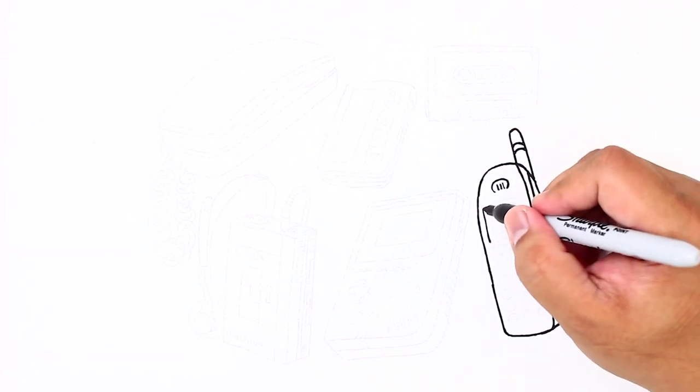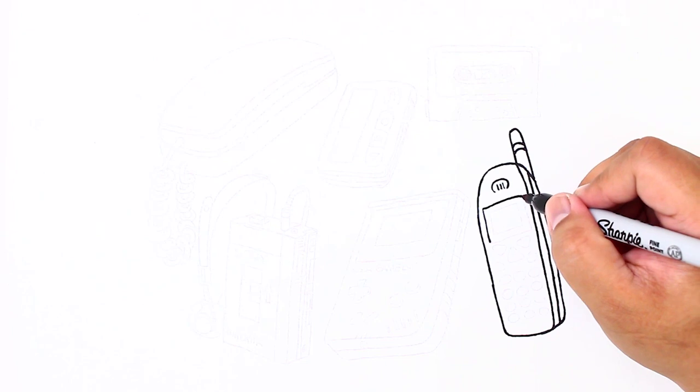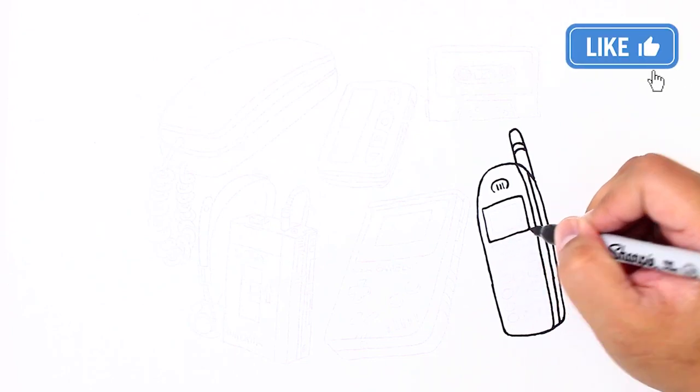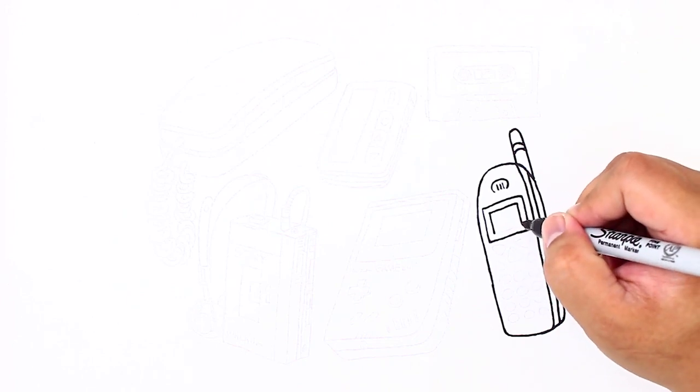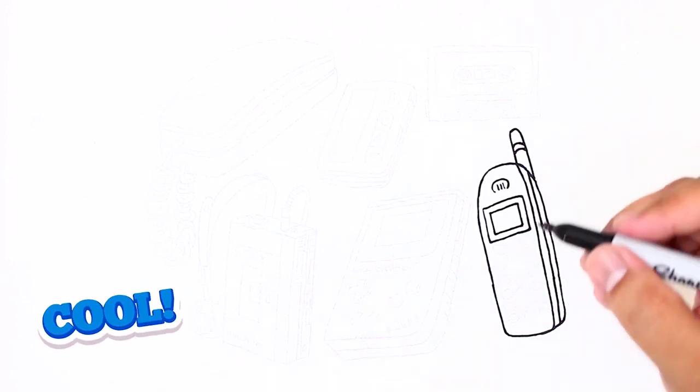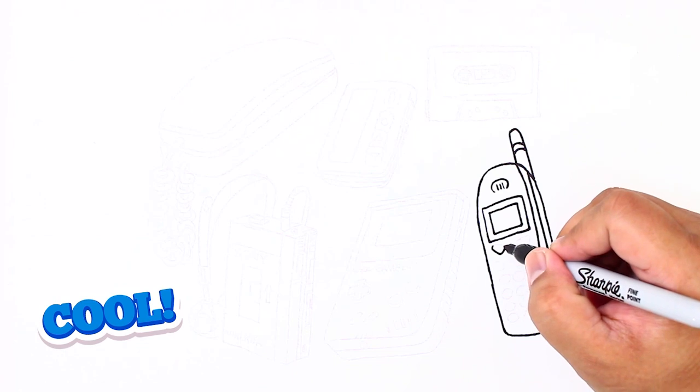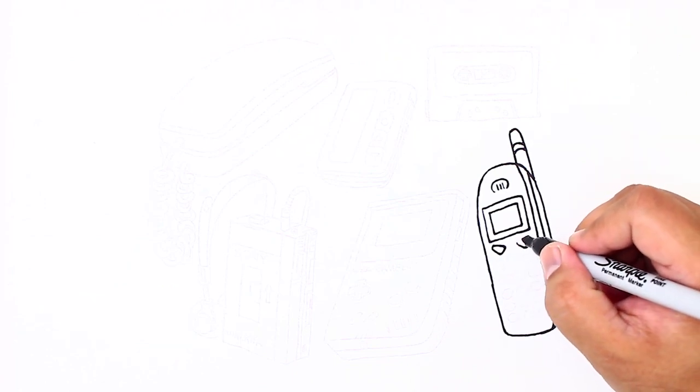It makes a ringing noise. In this day and age, you can text your friends on it. You can send them SMS messages. You can send them messenger messages. You can send them pictures of yourself. Yes, that's right. It's a mobile telephone.